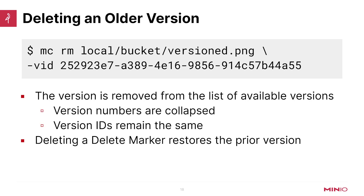If you want to delete an older version, you use the mc rm command with the --vid flag. The version is removed from the list of available versions. If you have versions 1 through 5 and you remove version 3, what you'll have left is versions 1, 2, 3, and 4 — the version numbers collapse, they don't stay the same. What does stay the same is the version ID, which is immutable and will never change. If you want to delete a delete marker and it's the last version in your list, deleting the delete marker actually restores the prior version of the object, and you'll be able to see that object again with mc ls even without the versions flag.